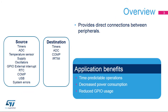The Interconnect Matrix, integrated inside STM32 products, provides direct connections between peripherals. Applications benefit from these interconnections to ensure time-predictable operations, to decrease power consumption by avoiding complex management of peripheral communications through reading and writing registers using CPU instructions, and in some cases, reducing the need to loop the signal from a source to a destination through a dedicated GPIO.